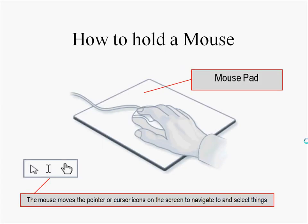You hold the mouse by laying your hand gently over it. For a right-handed person, the index finger falls naturally on the left button. For a left-handed person, the ring finger would fall over the left button. When you lay your hand on the mouse and move it — away from you, toward you, in circles — keeping the button side facing the computer, it moves a pointer or cursor on the screen.